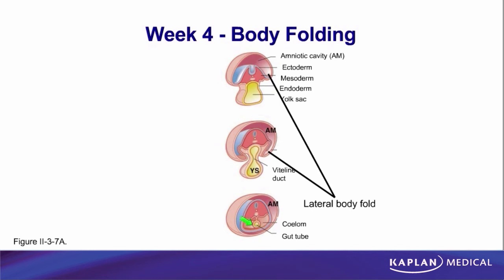What had been the upper layer of ectoderm ends up becoming the outer layer surrounding everything — the epidermis of our skin completely surrounding the embryo. What had been the middle layer remains the middle layer, between the endoderm on the inside and the ectoderm on the outside. So the adult body form is basically a tube inside a tube inside a tube: the innermost tube being the lining of the gut, the outermost being the surface of the skin, and everything in between — bone, cartilage, muscle, connective tissue — derived from the mesoderm.